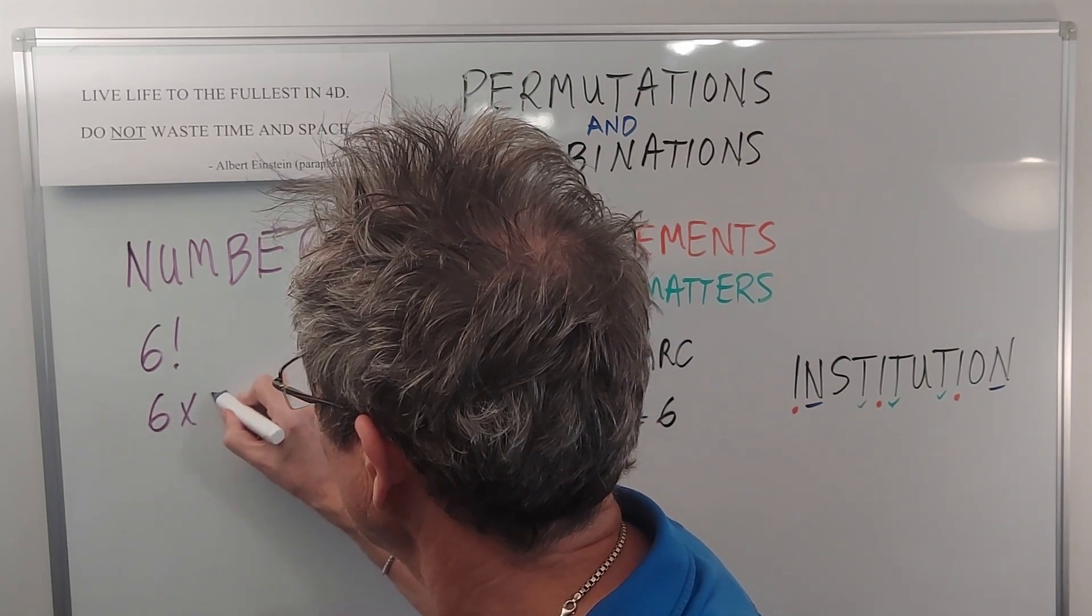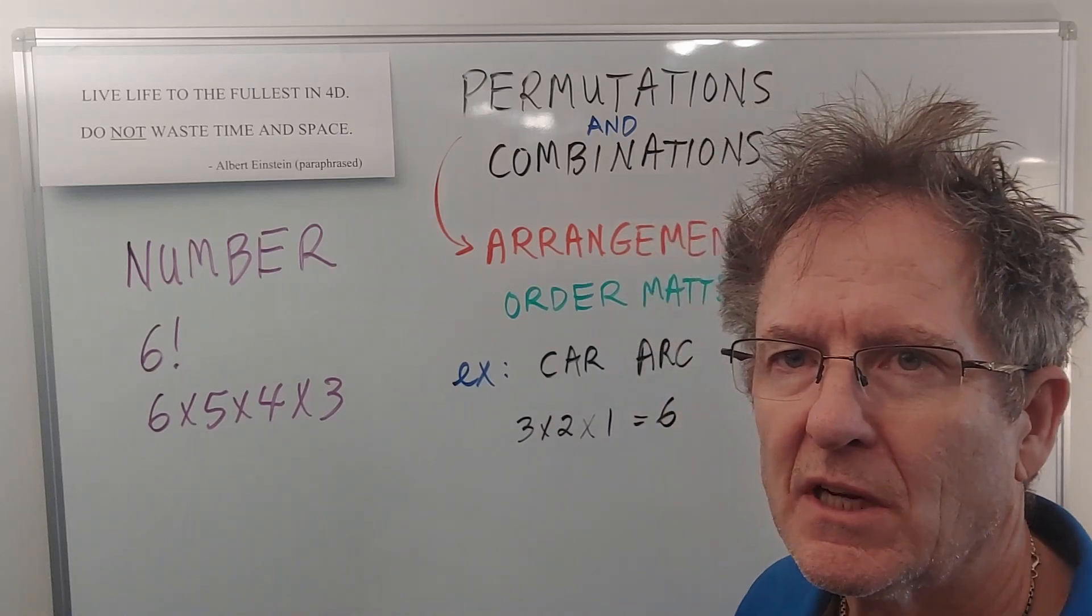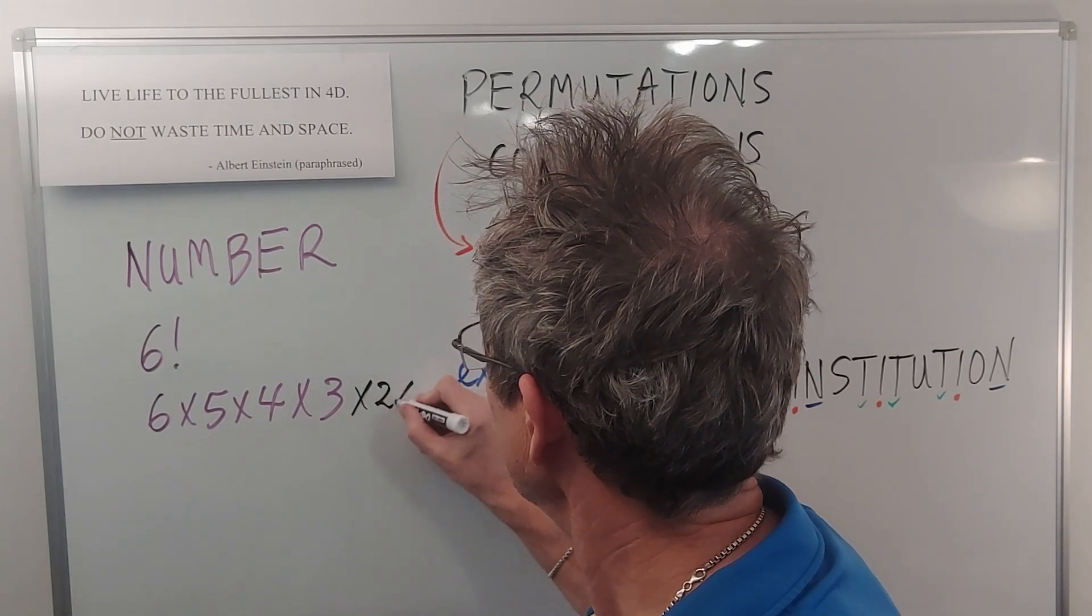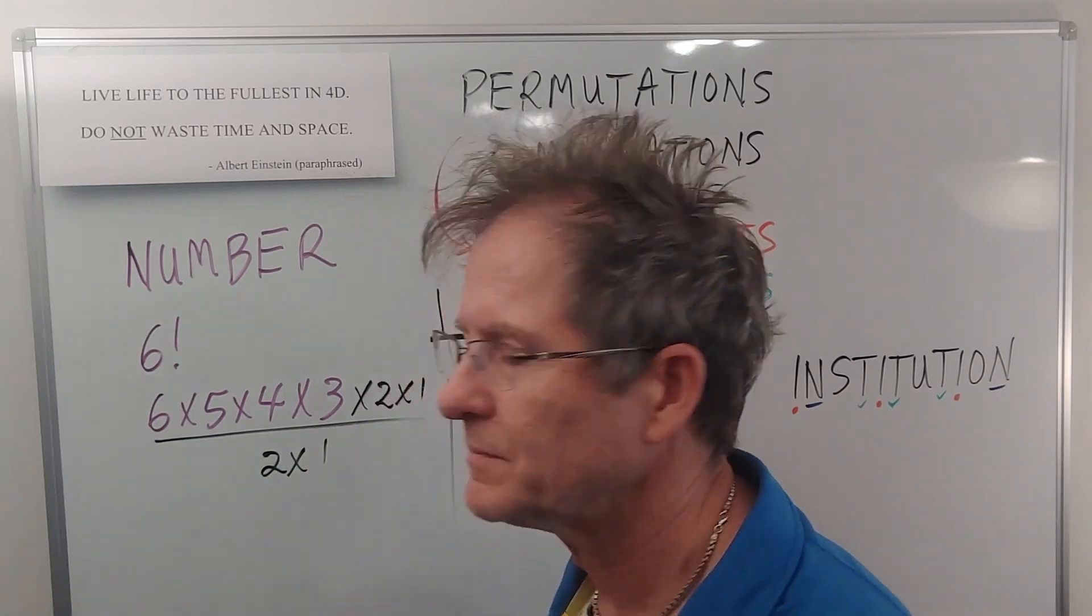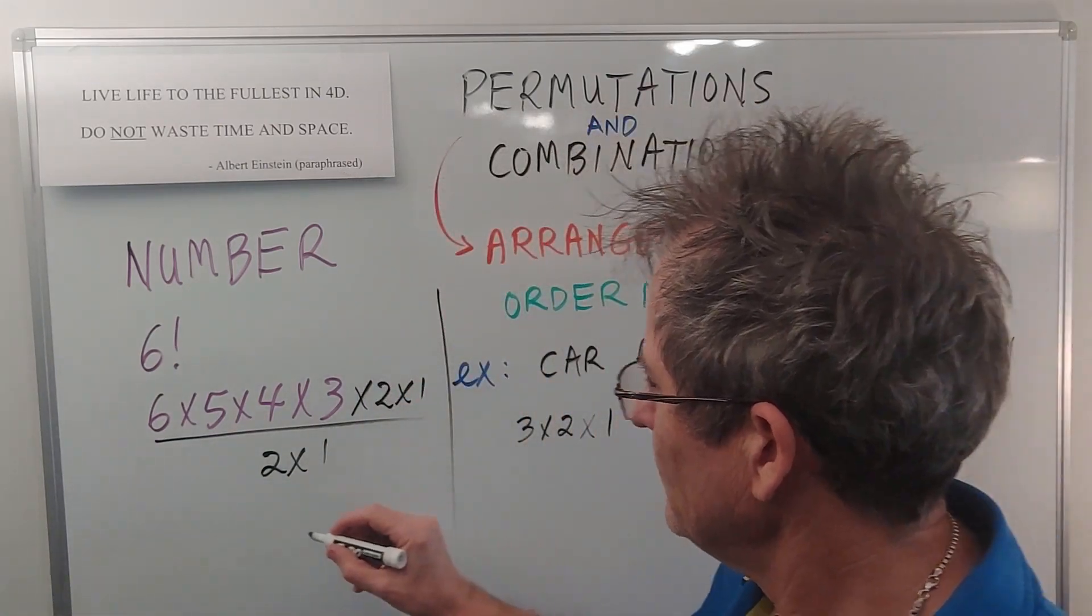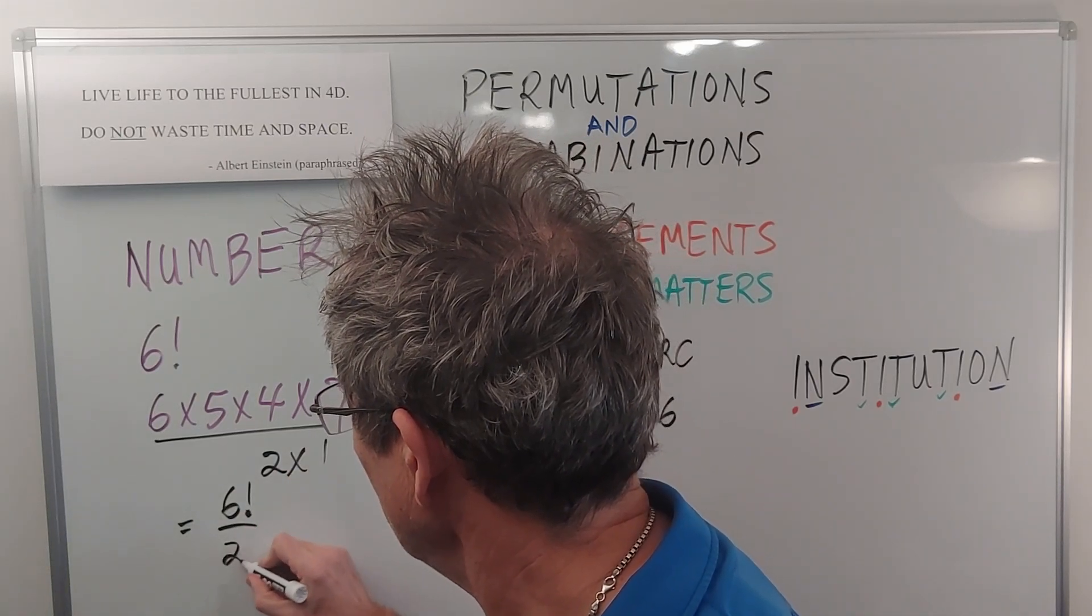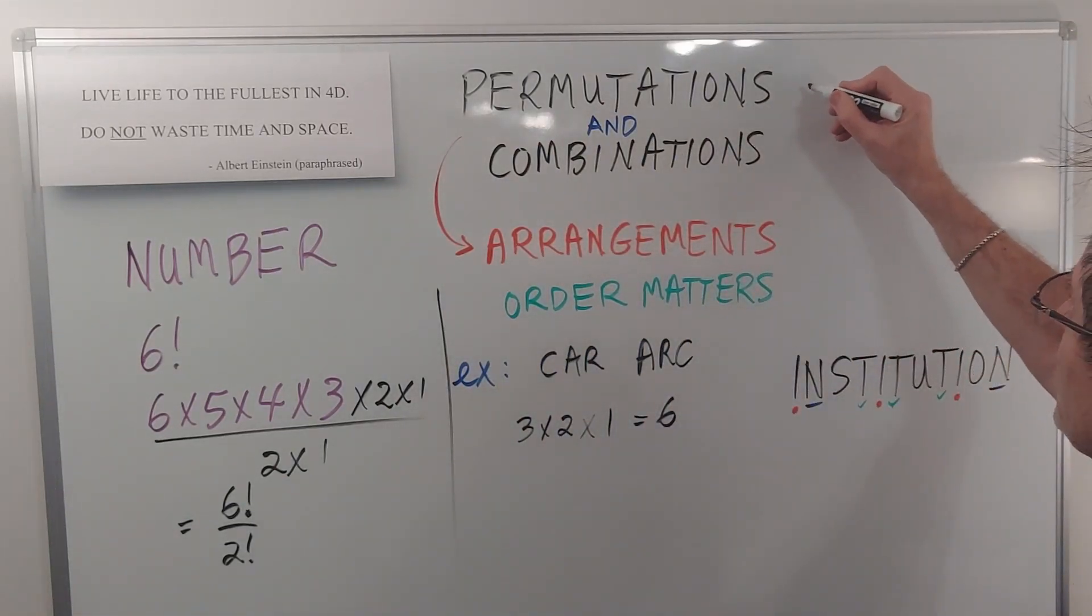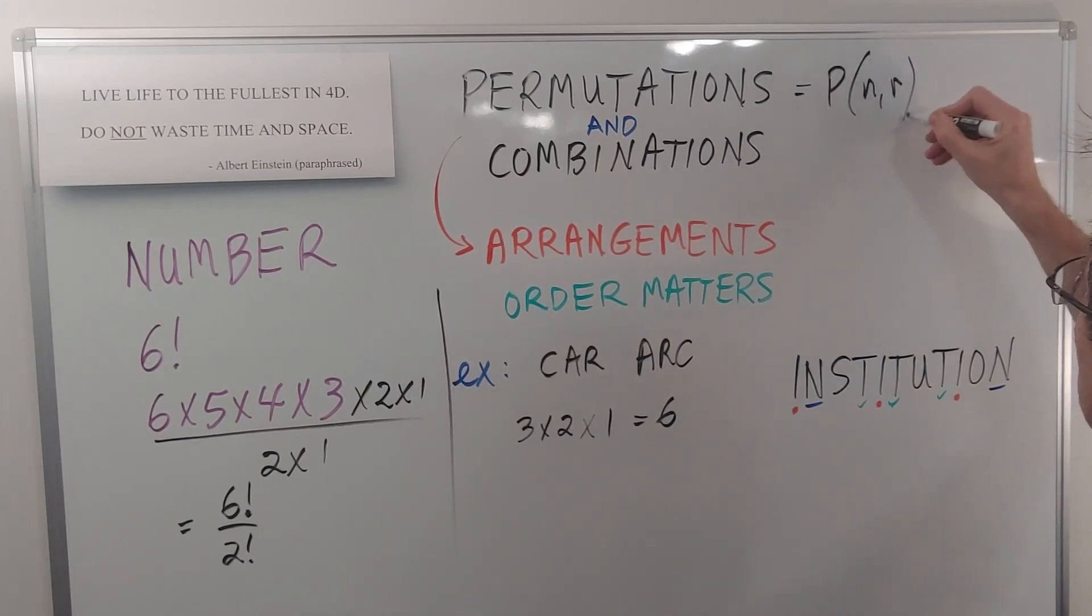And in order to come up with the formula for permutations, think about it this way: let's pretend that we did multiply by two times one, and then we divided by two times one. So we can write this as six factorial over two factorial. And that's how we come up with the formula for permutations. By the way, the symbols are either this or quite commonly that.